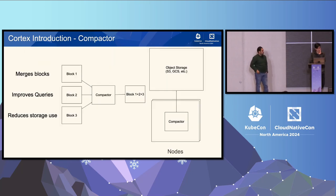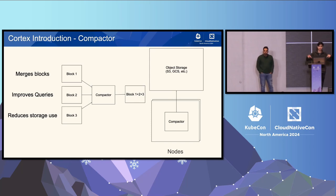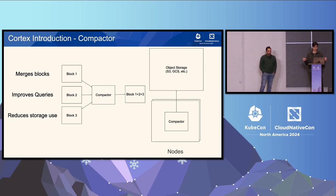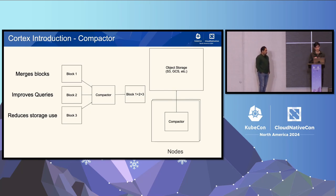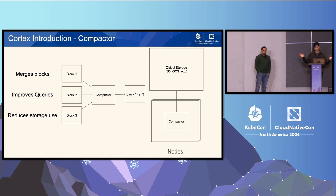The last component I wanted to talk about is the compactor. All the ingesters upload blocks to object storage, and eventually you'll have many blocks with the same sets of series in them. When you query all these blocks, it's inefficient because it has to de-duplicate metrics when serving to the client. So the compactor does that periodically — it compacts blocks together, creates a new de-duplicated block, and reduces storage use.